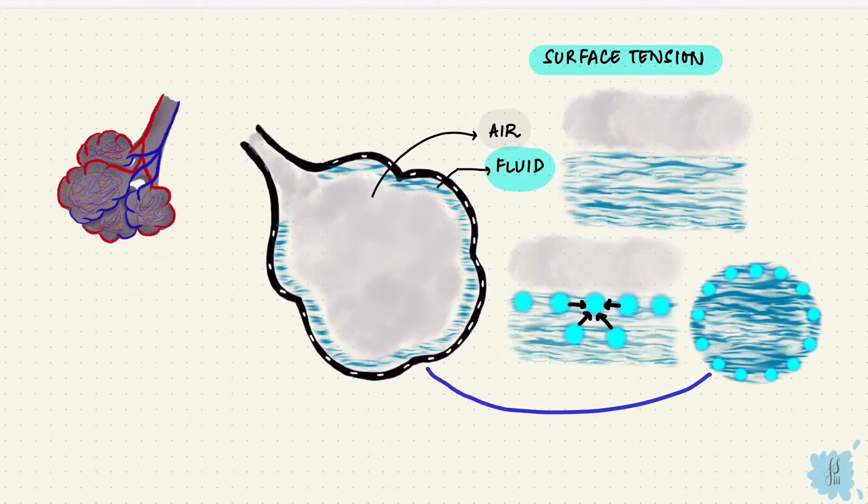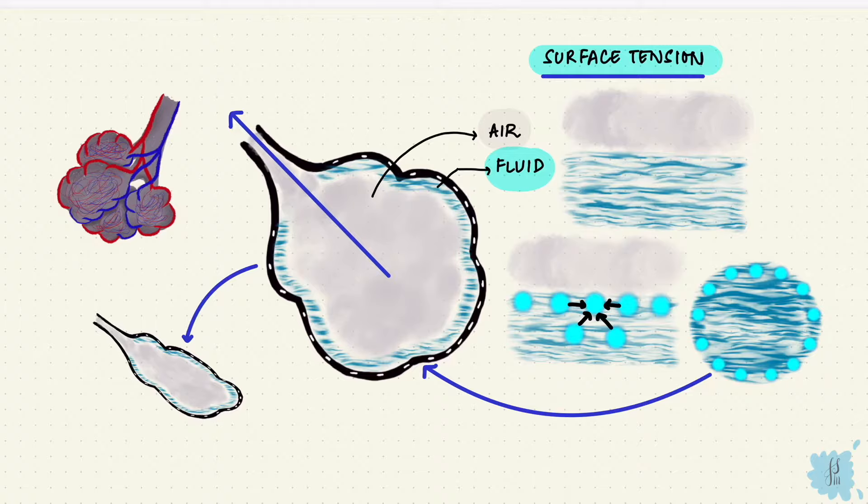Now imagine this happening inside the alveoli. The water molecules are contracting, air is leaving during expiration so it's getting smaller, and the surface tension can make these alveoli collapse. More the surface tension, more the chances of them collapsing.